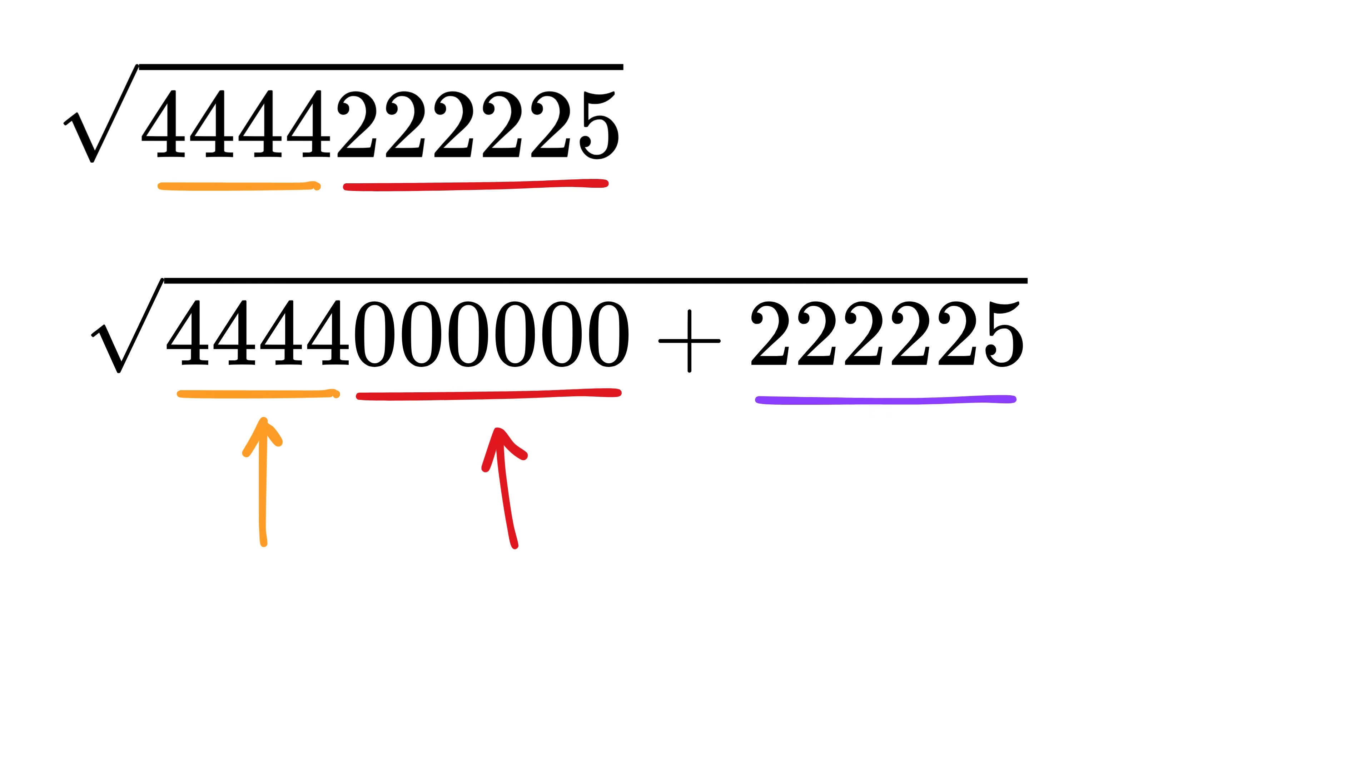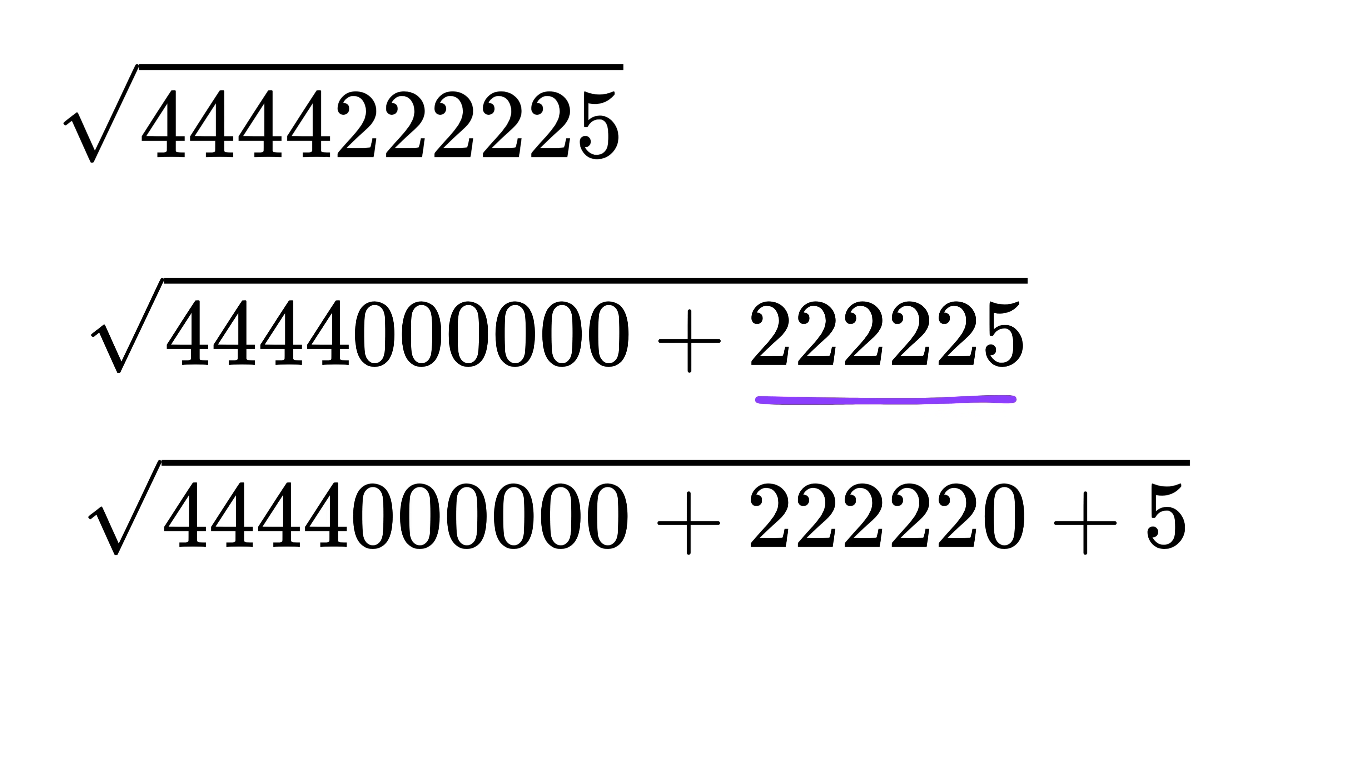And the second part is simply the leftover, which is this part of the number. Now we can again break this second part into this plus five. This is easy to understand, right?